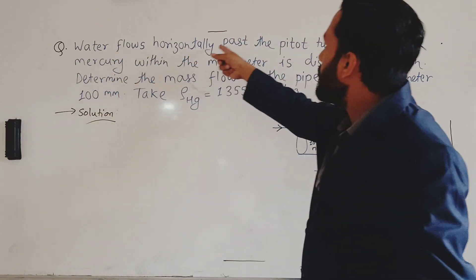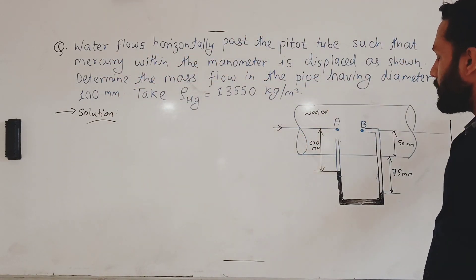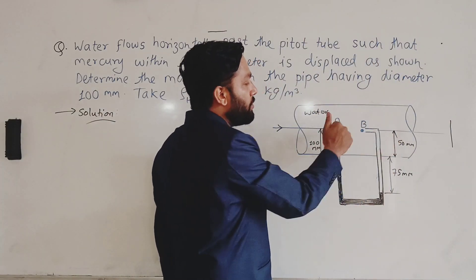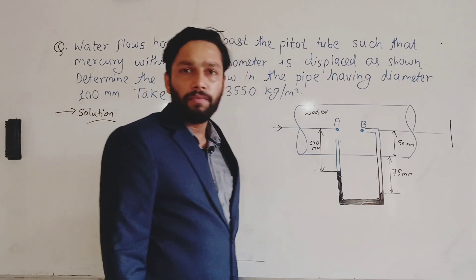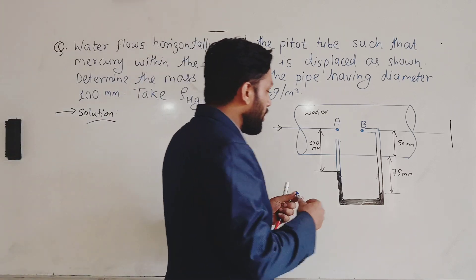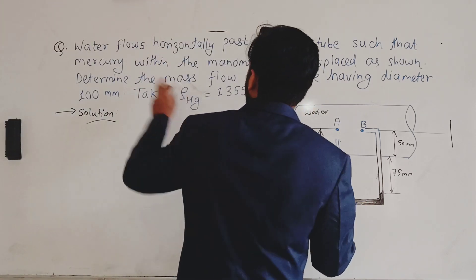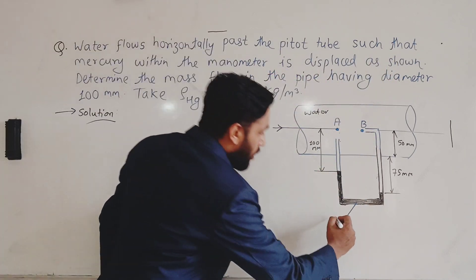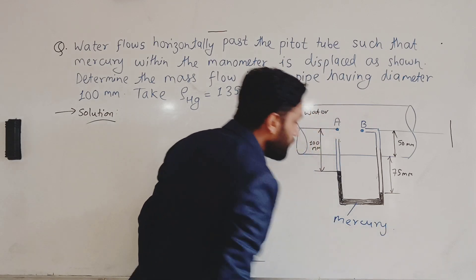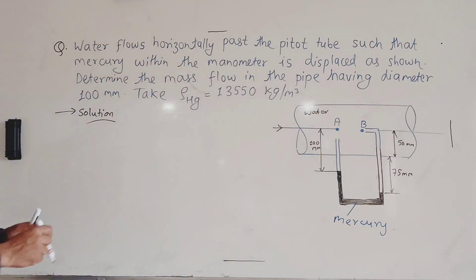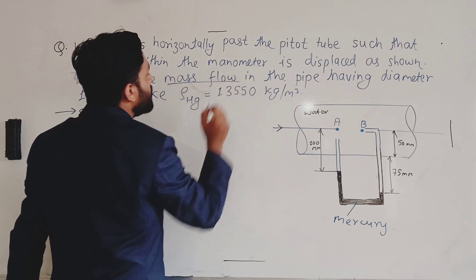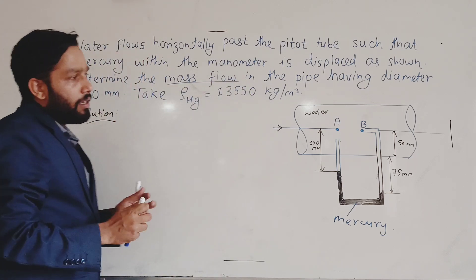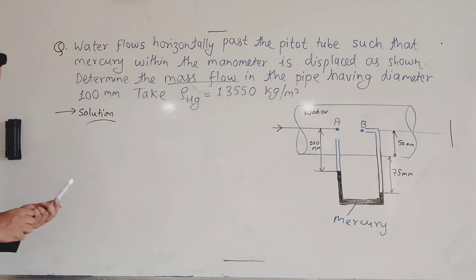Here you can see water flows horizontally past the Pitot tube — the direction is given. You are supposed to apply Bernoulli from A to B, not B to A, because you have to follow the direction. There is mercury in the manometer, displaced as shown. We need to determine the mass flow rate inside the pipeline, which has a diameter of 100 mm.